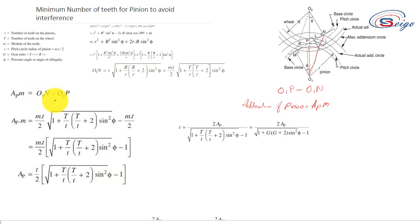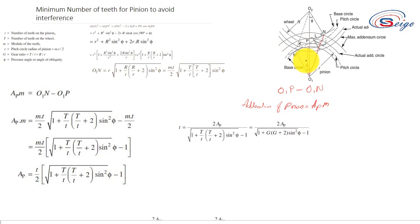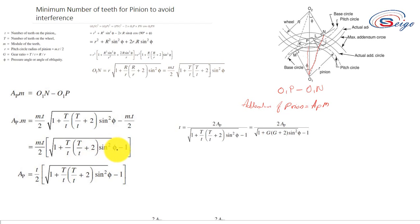AP times M equals O1N minus O1P. We have already calculated O1N, which equals mt over 2 times the square root of 1 plus capital T over small t times the quantity capital T over small t plus 2 times sin squared phi, minus O1P. O1P equals small r, which equals mt over 2. Taking mt over 2 as common, the equation becomes mt over 2 times the quantity root of 1 plus capital T over small t times the quantity capital T over small t plus 2 sin squared phi, minus 1.